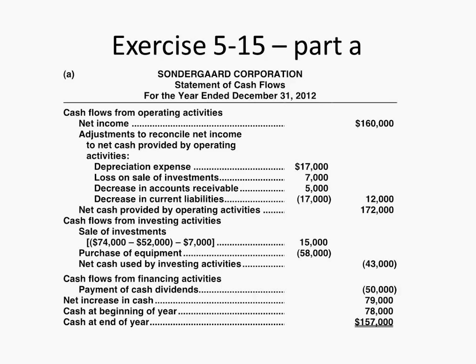Are there some things that are subjective on the exam, like formatting or labels? I'm not going to penalize. What I want to know is that you have things in the right place and that you clearly understand what it's supposed to be — that's adjustments to reconcile net income to cash. I just want to know that you understand where things go and how they behave. As long as it's reasonable, adjustments to net income to arrive at cash for operating activities.